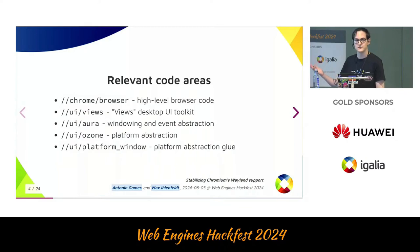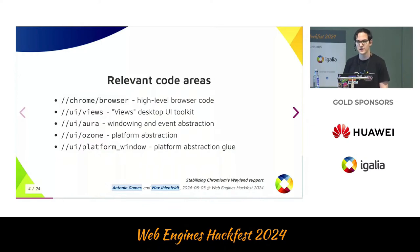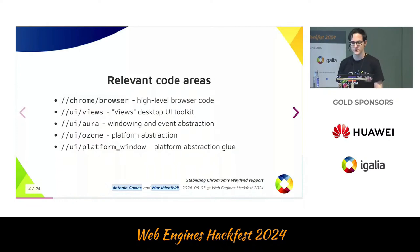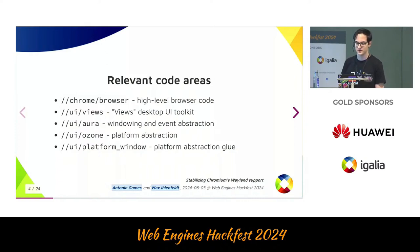I've included the paths if you are interested and want to take a look yourself at the code. Let's go from high level to more low level. The highest level is Chrome slash browser with all the high-level browser code, which is using the Views desktop UI toolkit, which does all the rendering, layout, and event handling, and has most of the UI element definitions the browser uses. On Windows and Linux, Views is using the Aura framework for windowing and event abstraction. If you're familiar with GDI or GTK, it's basically a platform-independent replacement for that. And on Linux, Aura is using Ozone as one final layer of platform abstraction, with some glue in UI slash platform window between Aura and Ozone.